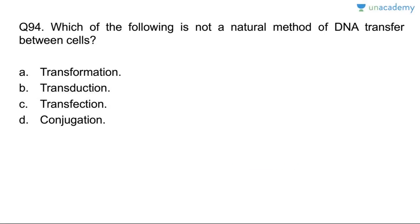Question ninety-four: which of the following is not a natural method of DNA transfer between cells? Transformation — yes, natural. Transduction — yes, natural. Conjugation — yes, natural. Transfection is the process of introducing naked or purified nucleic acid into eukaryotic cells — it is not a natural method.